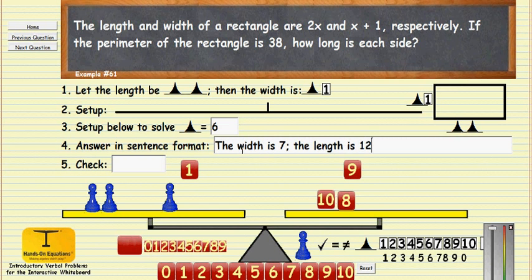And to do the check, seven and 12 is 19. That's the semi-perimeter, the full perimeter, twice 19 is 38. So we see that the check does work out. So this then is the way we would solve this problem with hands-on equations.